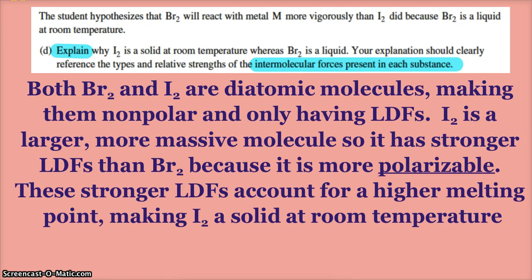Well, Br2 and I2, those are both halogens, diatomics, completely nonpolar, so we're only dealing with London dispersion forces. Since iodine is a larger, more massive molecule, it has stronger LDFs because it is more polarizable. Don't just talk about the mass, you got to say that it's more polarizable due to that larger mass.